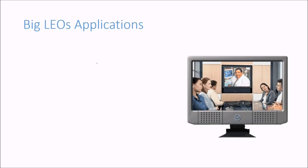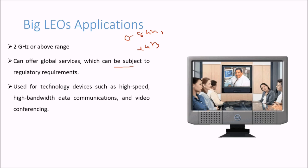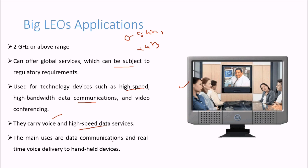What about big LEO applications? Small was 0.8 gigahertz, this is 2 gigahertz, 2 gigahertz and above. This can offer global services subject to regulatory requirements. This is used for technology devices such as high speed, high bandwidth data communications and video conferencing. As you can see in an example here, they carry voice and high speed data services. The main uses are data communications and real-time voice delivery to handheld devices.